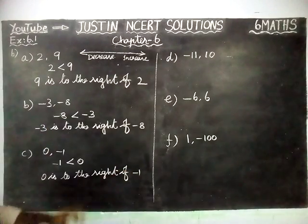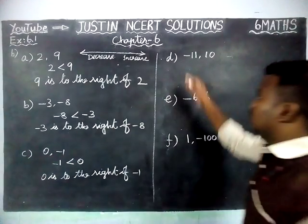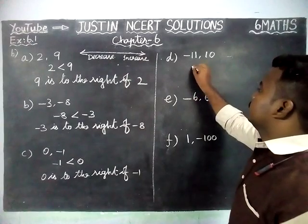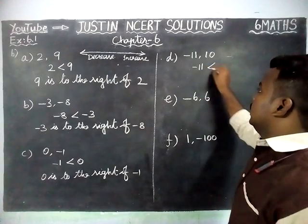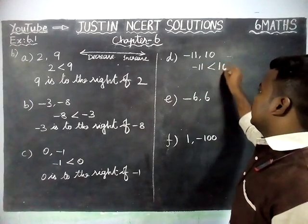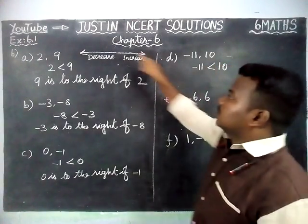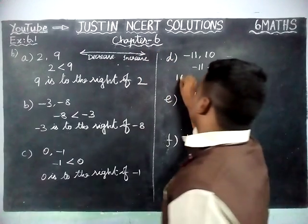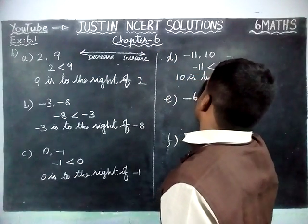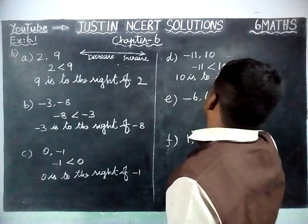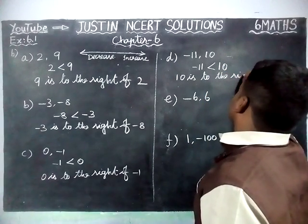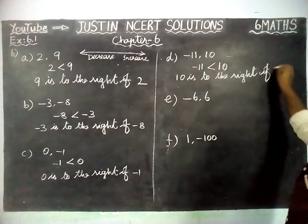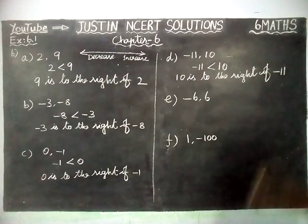In the same way, we are going to solve part D: minus 11 and 10. Minus 11 is less than 10. 10 is the greatest number, so it will come on the right hand side. Therefore, 10 is to the right of minus 11.